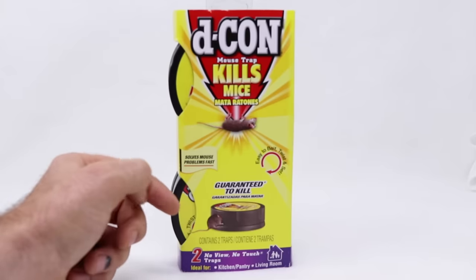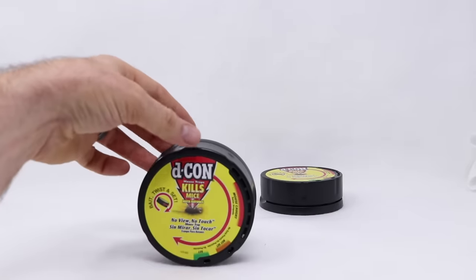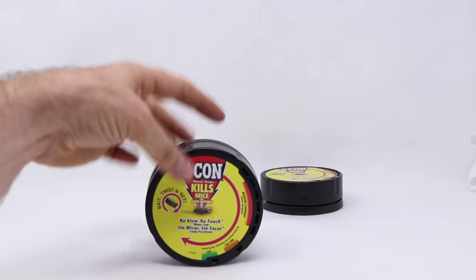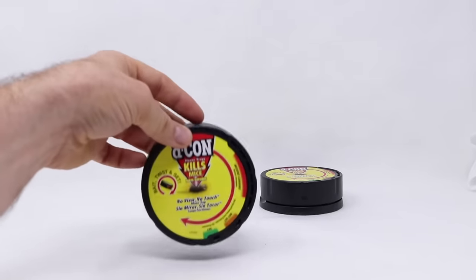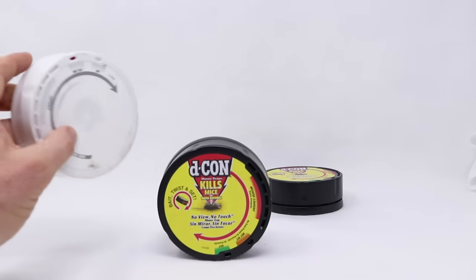There's two traps here, so let's take them out of the package and see what they look like. Here's the Decon No View No Touch Mousetrap. It's made out of plastic and it's about the size of a smoke alarm. The older versions actually look like a smoke alarm. This one's white.